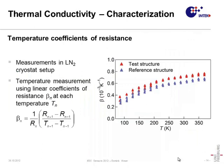The measurements were carried out in a liquid nitrogen cryostat setup. For the measurement of temperatures, linear temperature coefficients of resistance are used. These coefficients are shown in the graph for the test structure for the thermal conductivity, where the blue markers stand for resistors on the reference structure and the red ones for those on the test structure itself. The scatter at lower temperatures is the result of less accurate temperature stabilization of the setup at these temperatures.